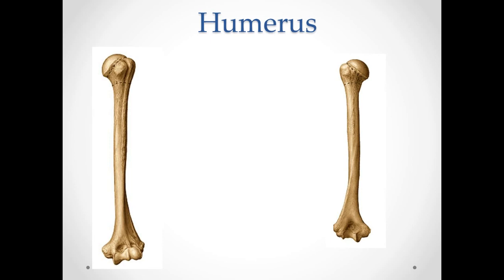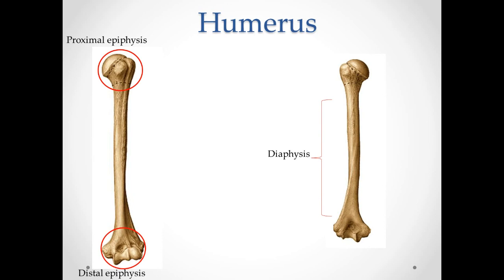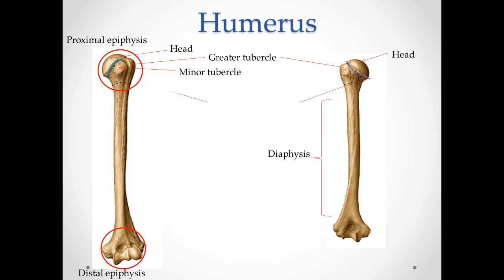Humerus consists of a body and two epiphyses — upper or proximal epiphysis and lower or distal epiphysis. The head of the humerus has tuberculum majus, which lies laterally. It has upper, middle and lower sides for muscle attachment. It has the crest of the greater tubercle, crista tuberculi majoris, which goes down from the greater tubercle. The minor tubercle, tuberculum minus, is located medially. The crest of the minor tubercle, crista tuberculi minoris, goes down from the tubercle of the same name. The anatomical neck, collum anatomicum, surrounds the articular surface of the head. There is also a bicipital groove, sulcus intertubercularis, which separates the tubercles and their crests.